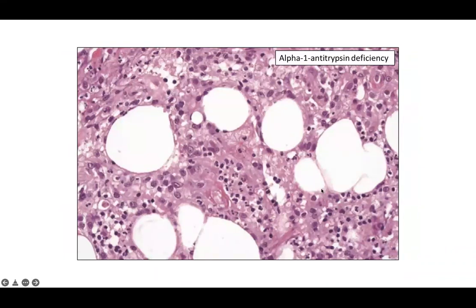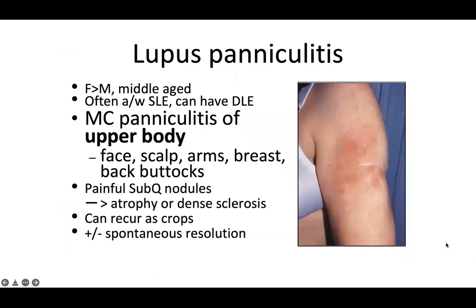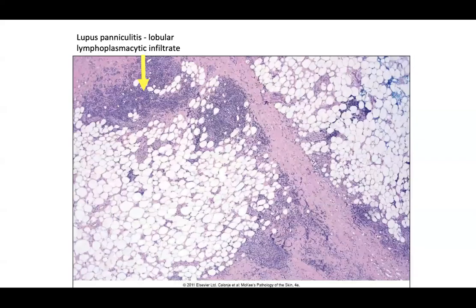Lupus paniculitis occurs more in females than males and can occur in middle-aged patients. It's often associated with systemic lupus erythematosus and concurrent cutaneous lupus such as discoid lupus. It's the most common paniculitis of the upper body but can include the back, buttocks, face, scalp, arms, and breasts. It presents with painful sub-Q nodules leading to atrophy or dense sclerosis. From low power, you see a lobular paniculitis — importantly, when you see lymphoid aggregates and a lobular lymphoplasmacytic infiltrate, think lupus paniculitis.